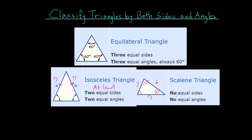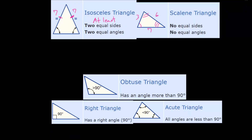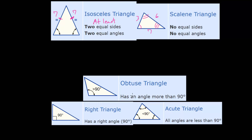Those are the three classifications when talking about side length. We also have three other classifications when talking about the angles, and this mostly has to do with the biggest angle in the triangle. For a triangle that has its biggest angle greater than 90 degrees, we call this an obtuse triangle. An obtuse angle is an angle greater than 90 degrees, so if a triangle contains an obtuse angle, then it's considered an obtuse triangle.